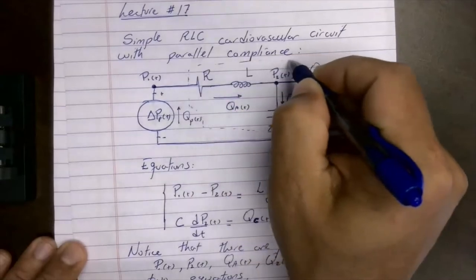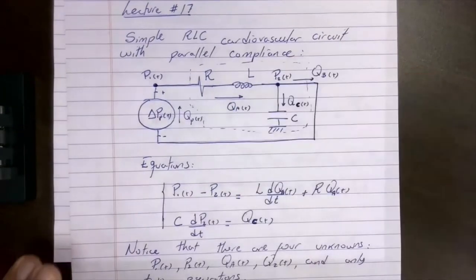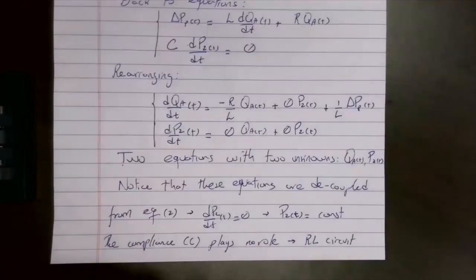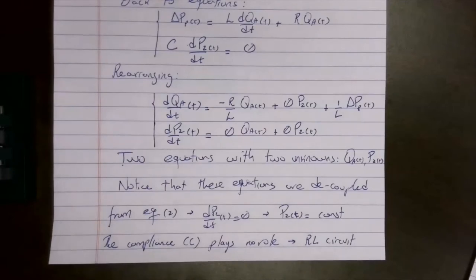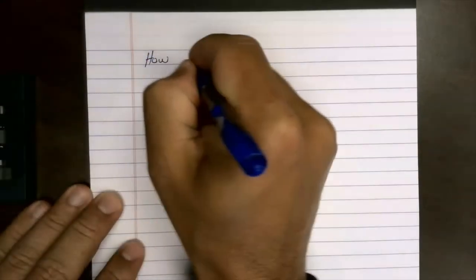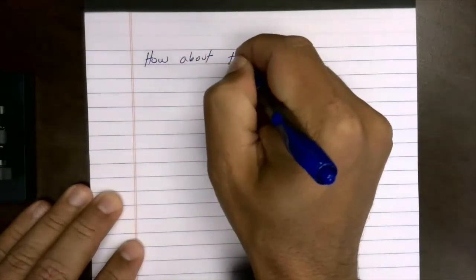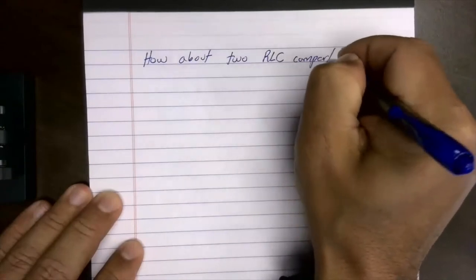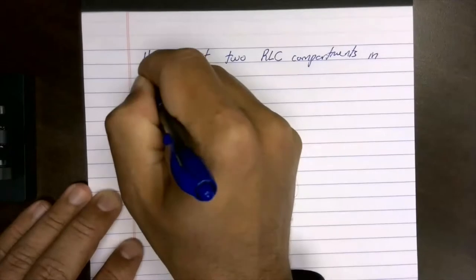For RLC compartments to actually work the way we expect, we need more than one compartment. So now let's look at a different example where we add two RLC compartments in series with each other.